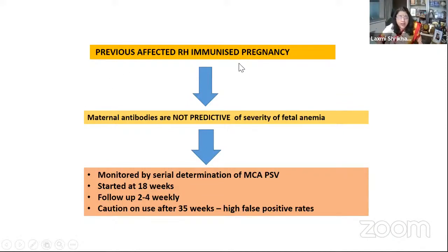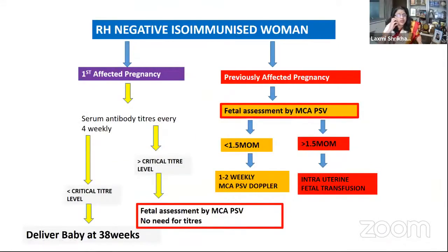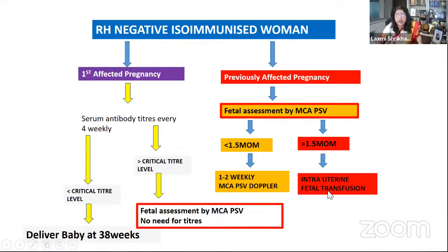If she gives history of a previously affected RHD isoimmunized pregnancy, maternal antibodies are not predictive of severity of fetal anemia. Monitor by serial determination of MCA PSV — started at 18 weeks, done every 2 to 4 weeks, and after 35 weeks there are high chances of false positive results. If this is the first pregnancy, do serum antibody titers every 4 weeks; if less than critical level, deliver at 38 weeks. If values are above critical titer, do fetal assessment by MCA PSV. If she gives history of previous affected pregnancies, start serial MCA PSV monitoring; if values are less than 1.5 MoM, do 1 to 2 weekly monitoring. If values are more than 1.5 MoM, she needs intrauterine fetal transfusion.